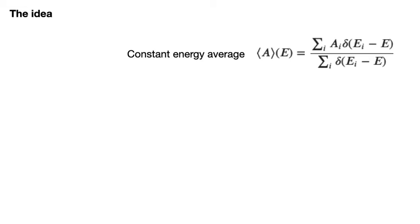As discussed in the previous video this complicated looking expression expresses an easier statement. The constant energy average for A can be found by adding together the A_i values for all of the states that have an energy of E and dividing by the number of states with an energy of E.